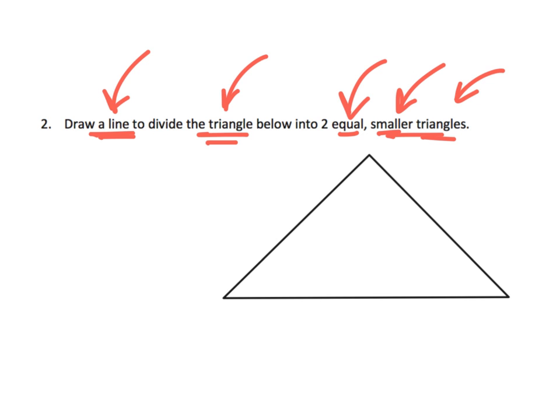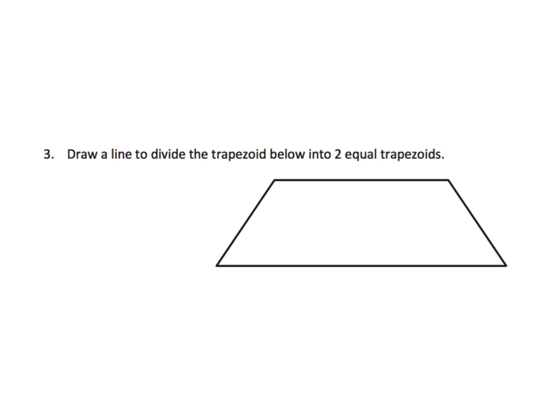Draw a line to divide the triangle below into two equal smaller triangles. They have to be equal triangles because of course you could say, well, there, two triangles, but they're not necessarily equal. But how could we do it? Well, one way is you could just kind of go like this and it makes the two triangles appear as though they're equal, and that's close enough.